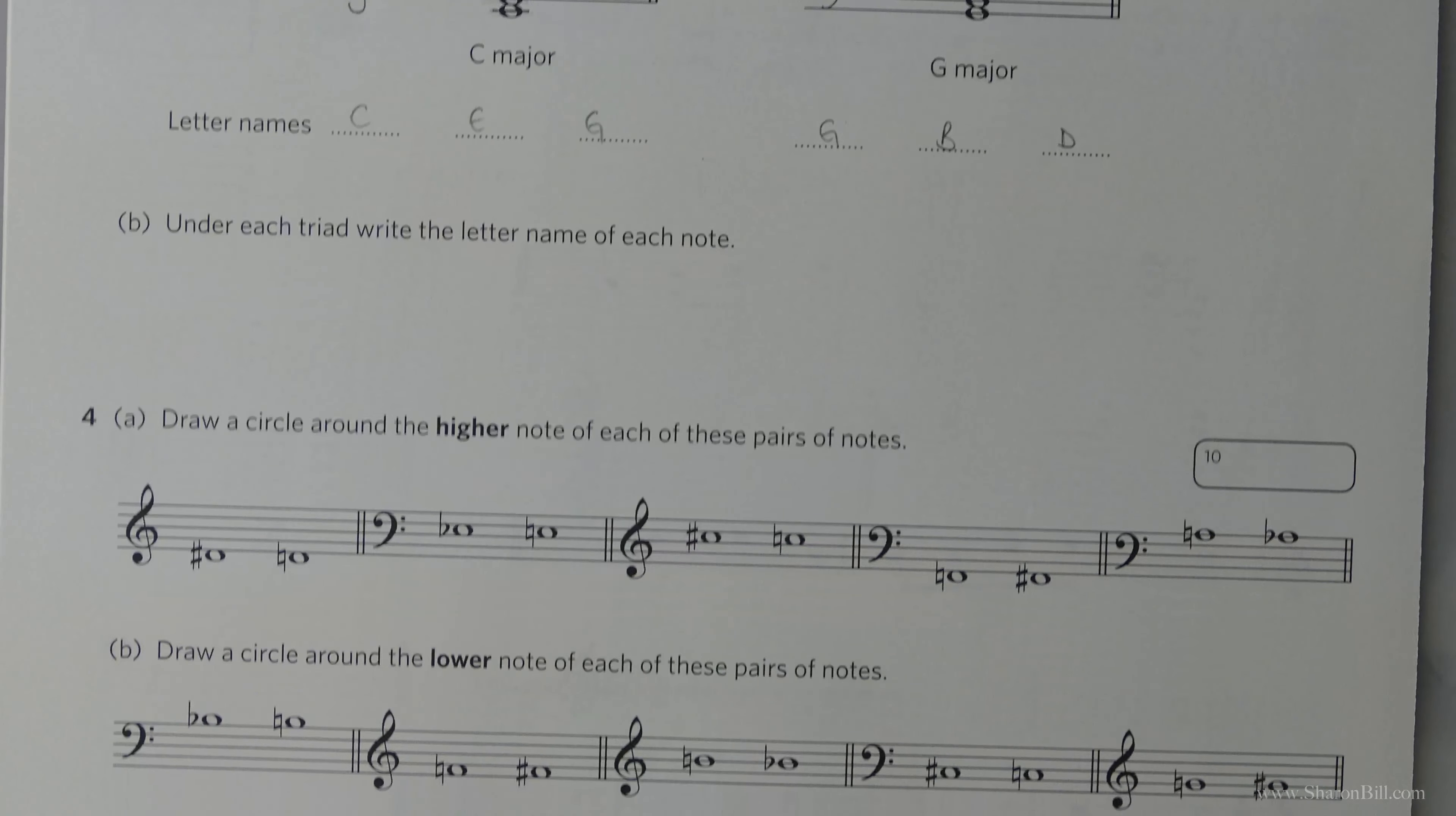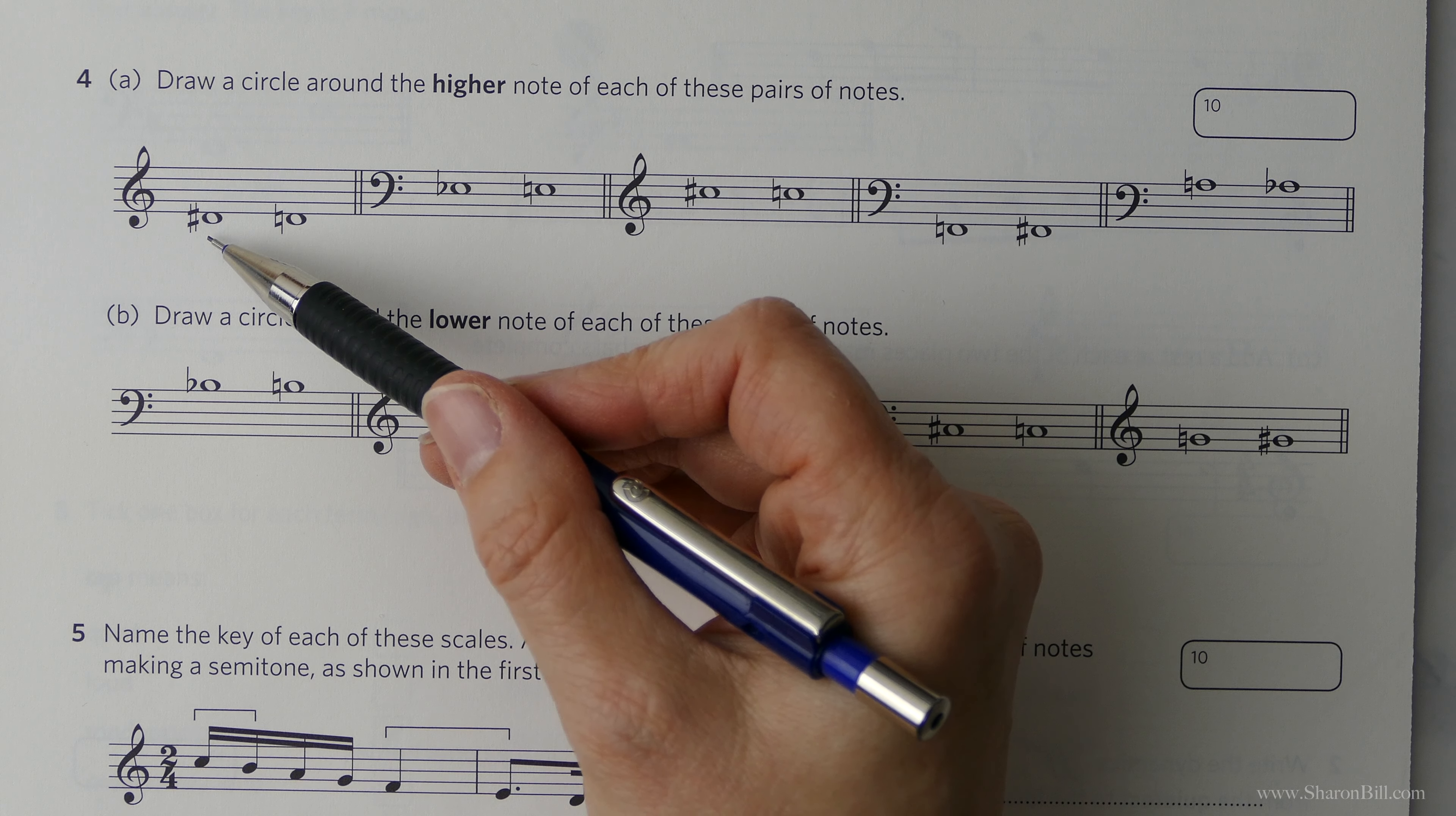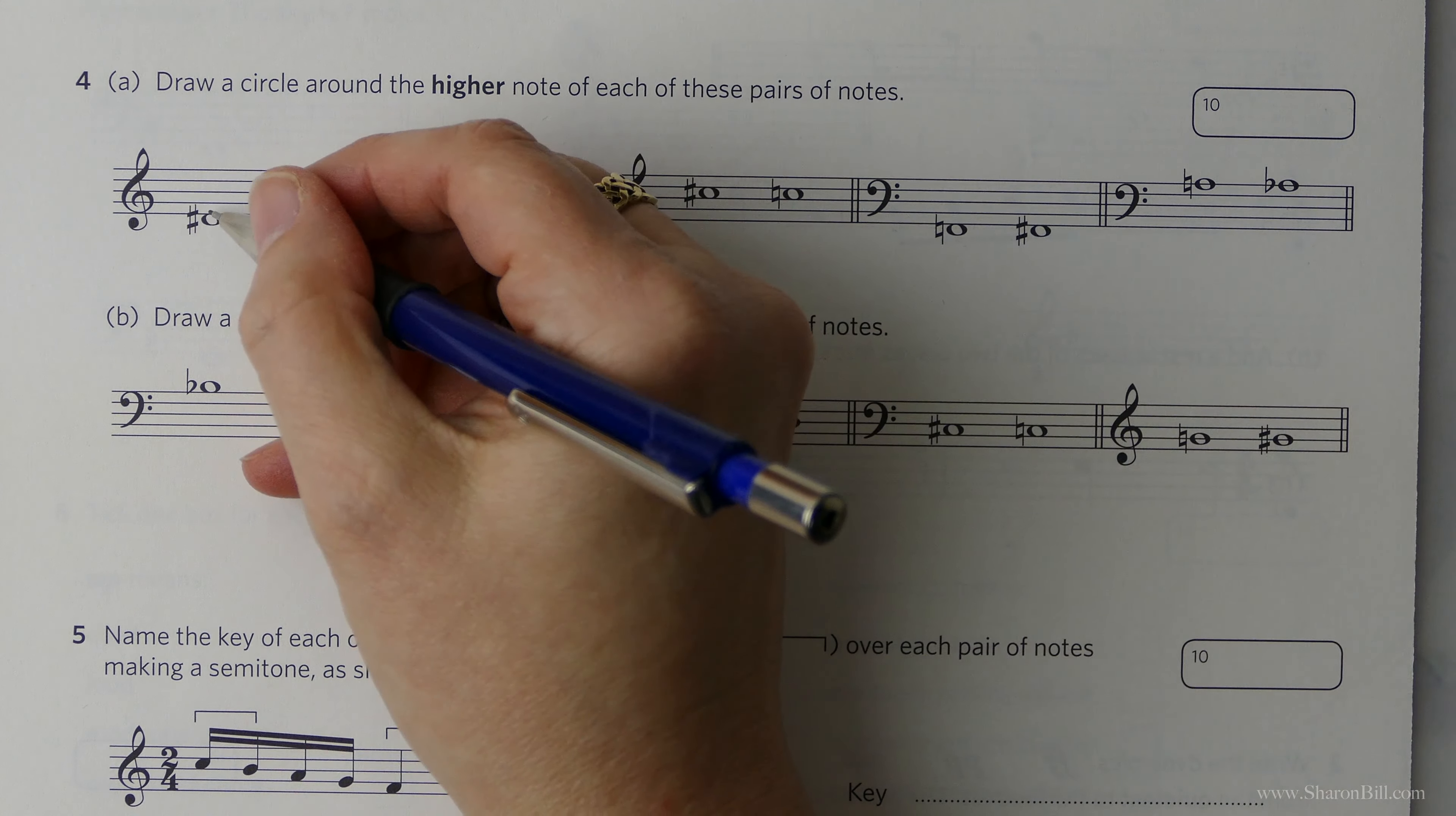Now let's move on to the next question. So we're looking at semitones now. So we're asked to draw a circle around the higher note of each of these pairs of notes in this first section here. And so we have here in the treble clef, a D sharp and a D natural. Now we know that a sharp raises by a semitone and therefore the D sharp must be the higher of the pair. And if you want to just visualize that, we have a D and a D sharp. The sharp raises by a semitone. And so we can see that the sharp is the higher of the pair.